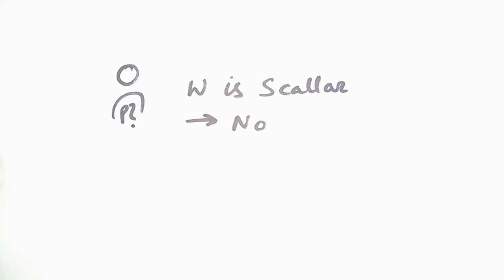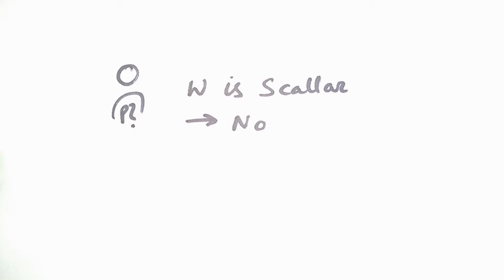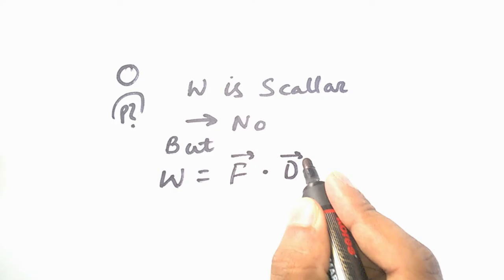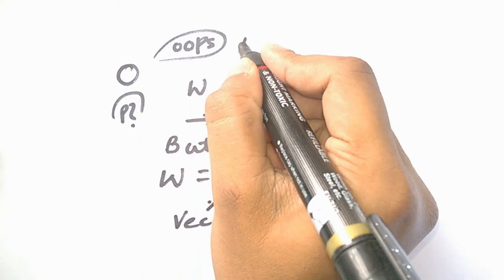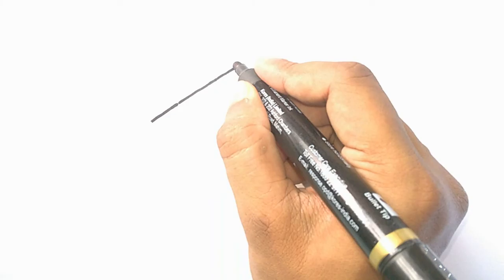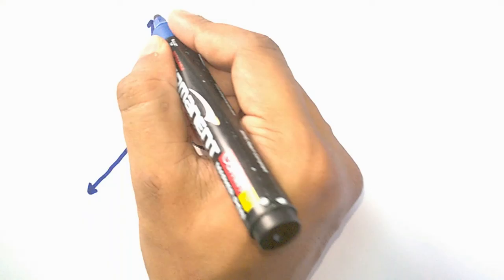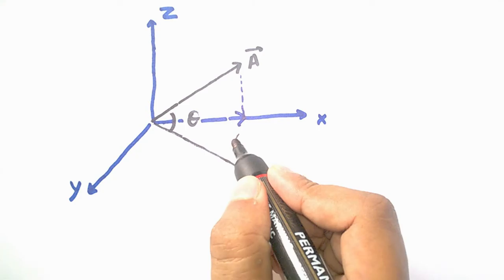Any person who has anything to do with physics, especially classical physics, might have noticed that work done is a scalar quantity — it does not represent any direction — and work done is the product of two vectors: force and displacement. So the question you should be asking is: how can you get a scalar quantity out of the product of two vectors?